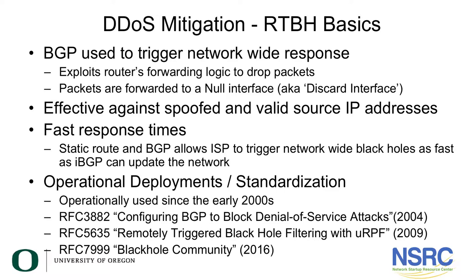This technique is very effective against both spoofed and valid source IP addresses, and we still see many denial of service attacks with spoofed, i.e., forged, source IP addresses. Importantly, RTBH filtering gives extremely fast response times when filtering across network-wide infrastructures. By utilizing a static route and pre-configured BGP, ISPs can trigger network-wide filtering as fast as IBGP can update the network — and speed is of the essence to drop traffic as quickly as possible.